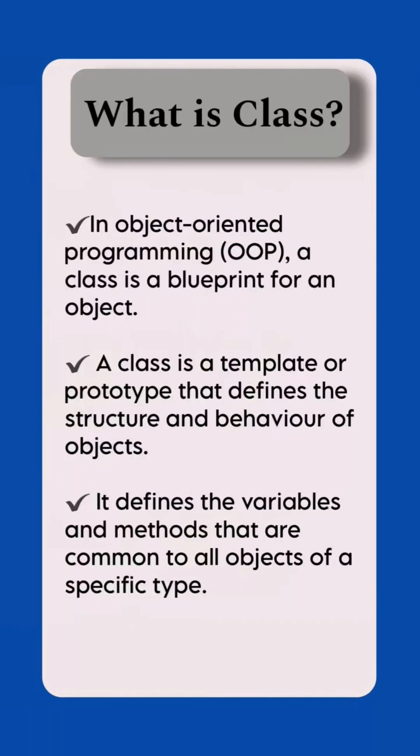What is class? In object-oriented programming, a class is a blueprint for an object. A class is a template or prototype that defines the structure and behavior of objects. It defines the variables and methods that are common to all objects of a specific type.